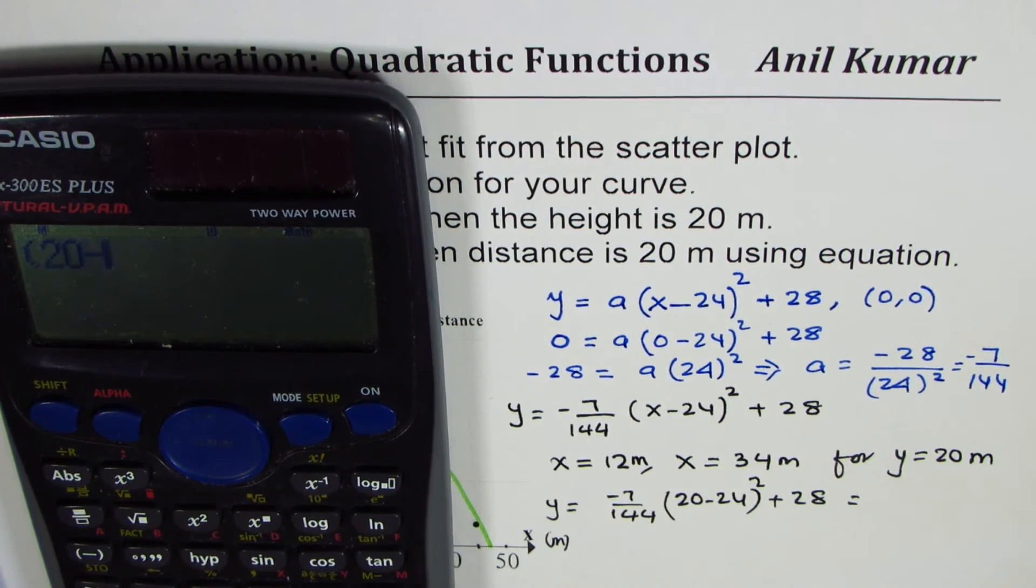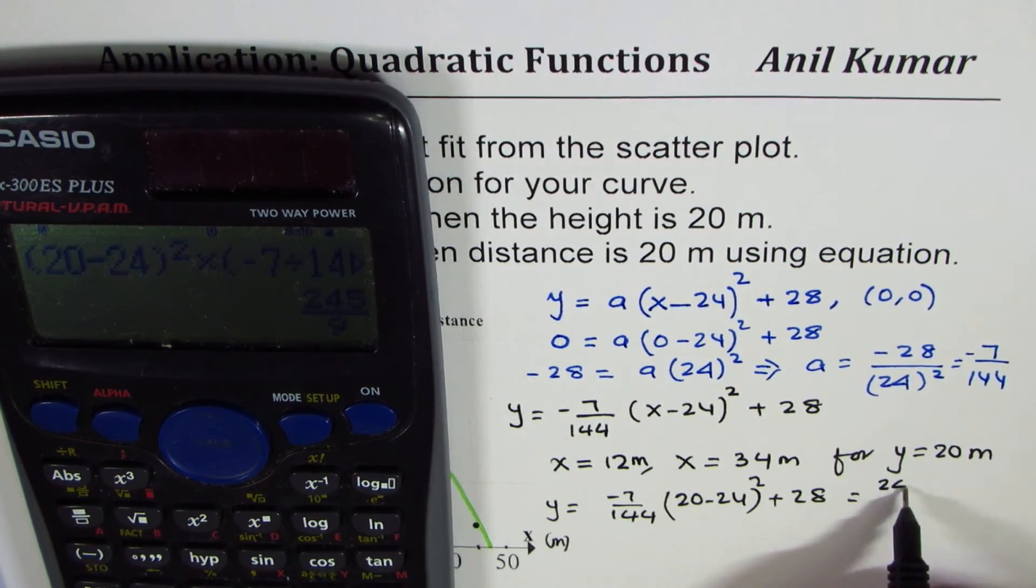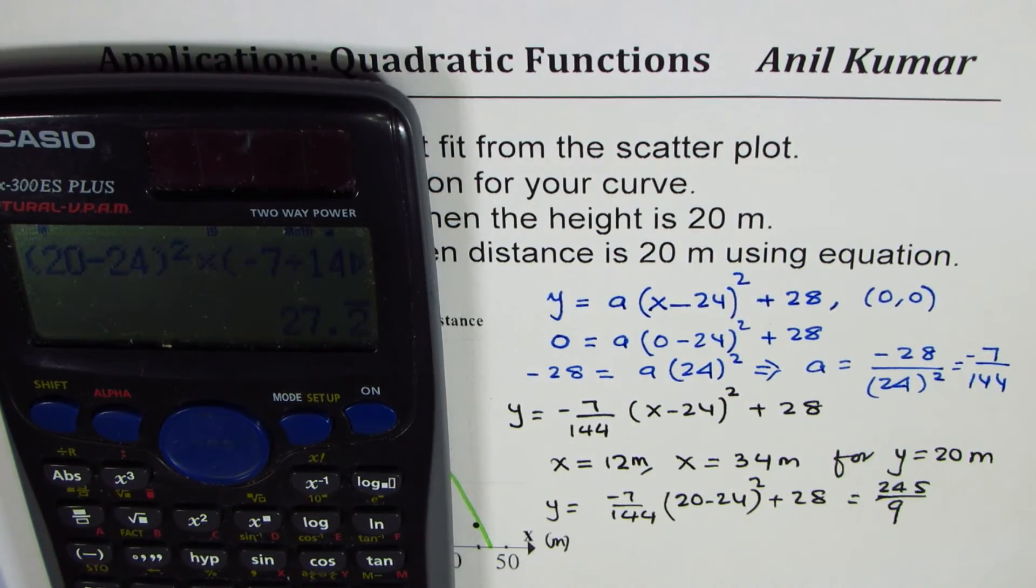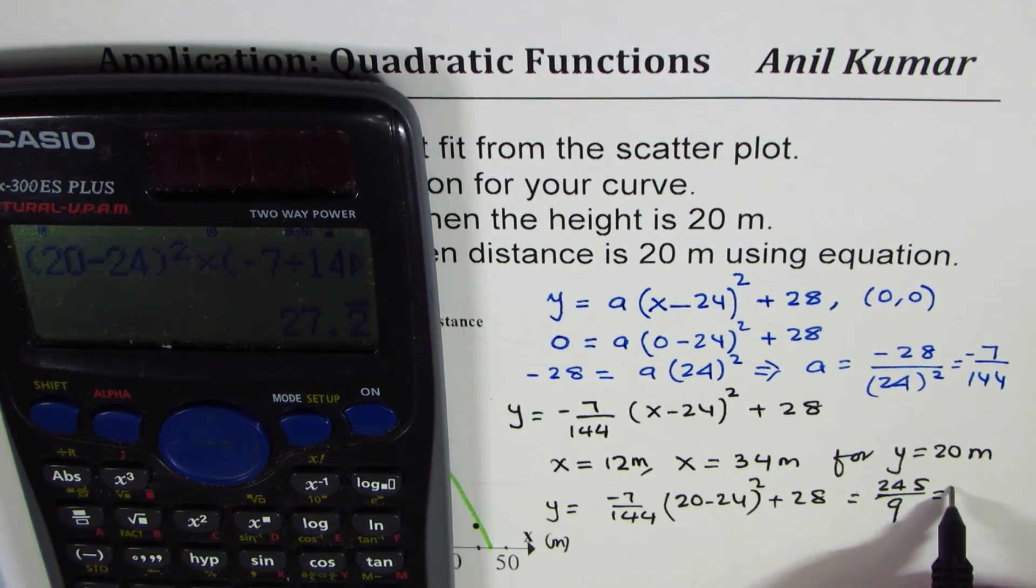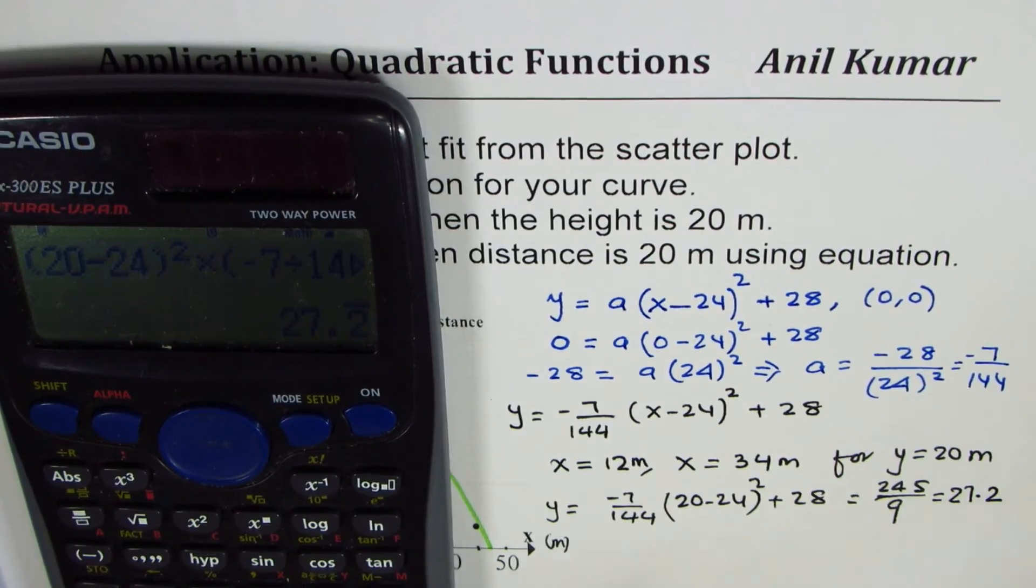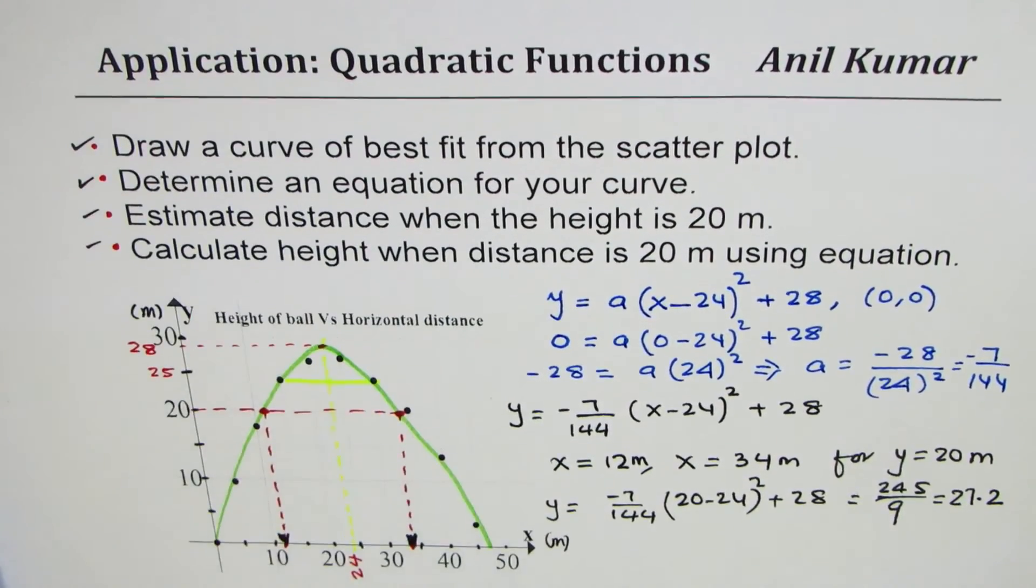We'll do (20 - 24)² × (-7/144) + 28, let's do like this. We get an answer which is 25/9 and this could be written in decimals as 27.2. So we get 27.2 as the height at the distance of 20.